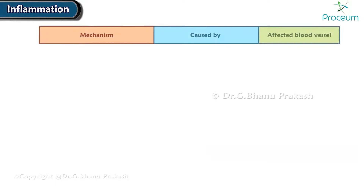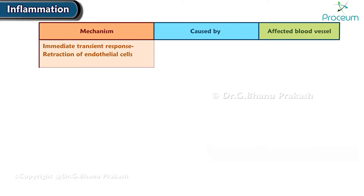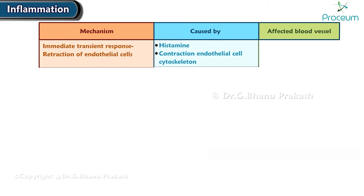The immediate transient response, due to the retraction of the endothelial cells, is caused by histamine and the contraction of the endothelial cell cytoskeleton, and affects the venules.